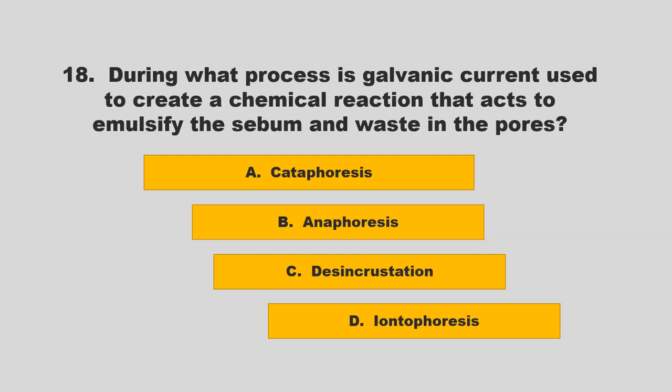During what process is galvanic current used to create a chemical reaction that acts to emulsify the sebum and waste in the pores? Is it cataphoresis, anaphoresis, desincrustation, or ionophoresis? If you chose C, desincrustation, you are correct.